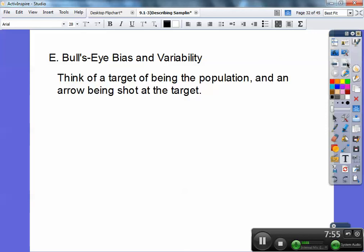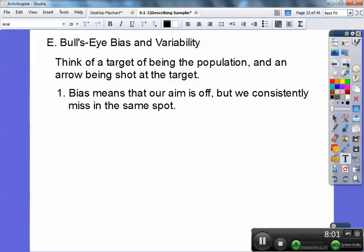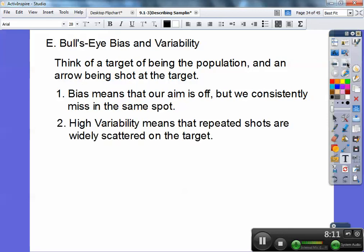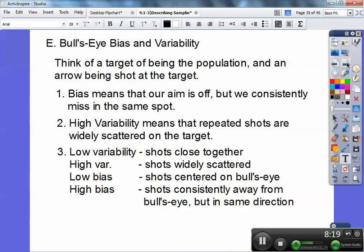Speaking of bullseye, bias and variability. Think of a target being the population and the arrow being shot at the target. Bias means that our aim is off, but we consistently miss in the same spot. High variability means that the repeated shots are widely scattered on the target. Low variability means the shots are close together. High variability means the shots are widely scattered. Low bias means shots centered on the bullseye. High bias means shots consistently away from the bullseye but in the same direction.